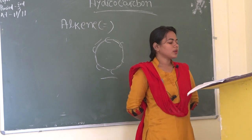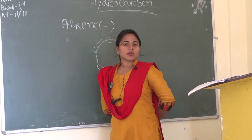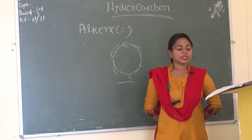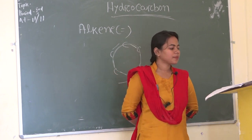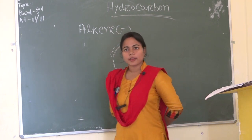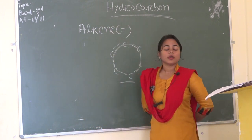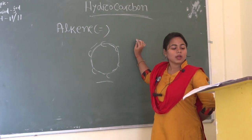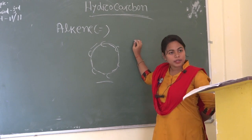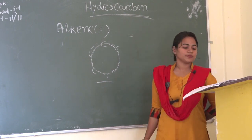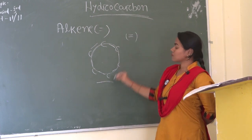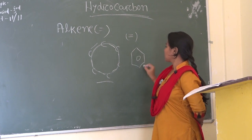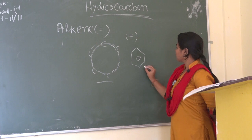And aromatic — delocalized pi electrons are present in this structure. It has alternating single and double bonds. Delocalized pi electrons are present. The common example of aromatic hydrocarbon is benzene.